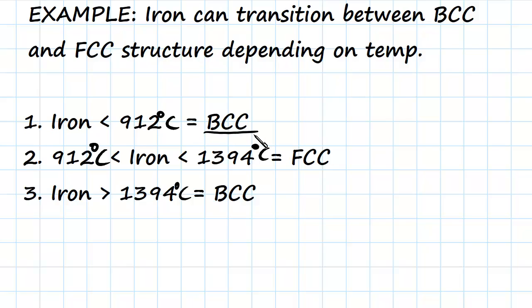But then between 912 degrees and 1394 degrees Celsius, iron transitions into FCC form. So we go from BCC to FCC for that temperature.